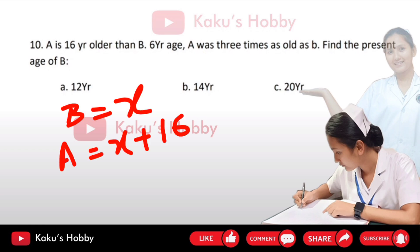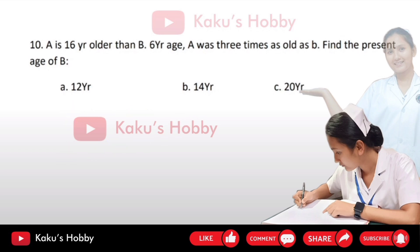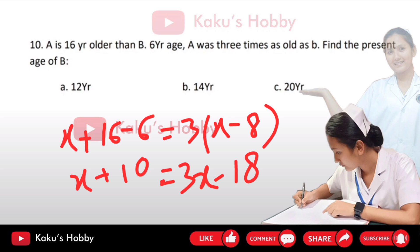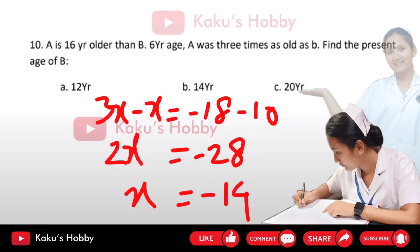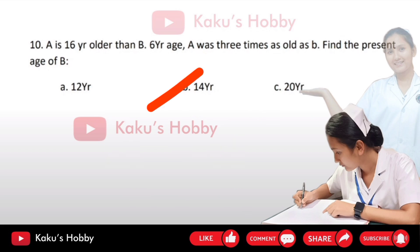Question number 9: A is 16 years older than B. Six years ago, A was 3 times as old as B. Find the present age of B. The answer is option B.